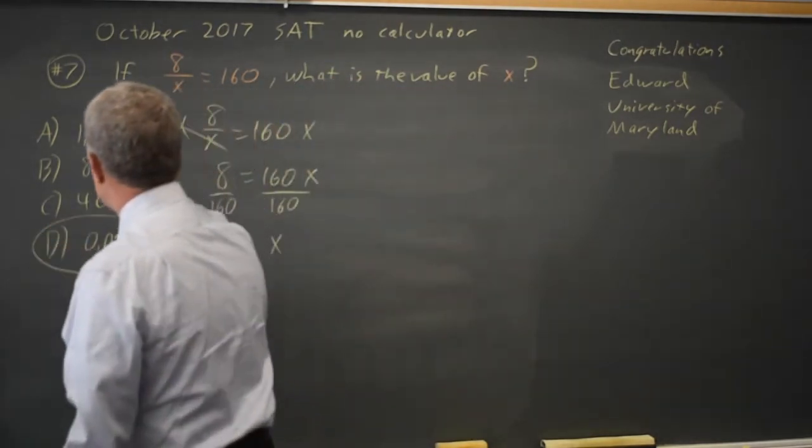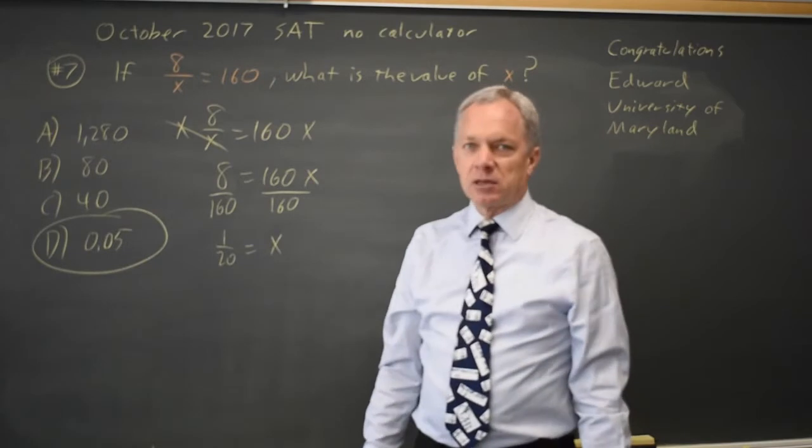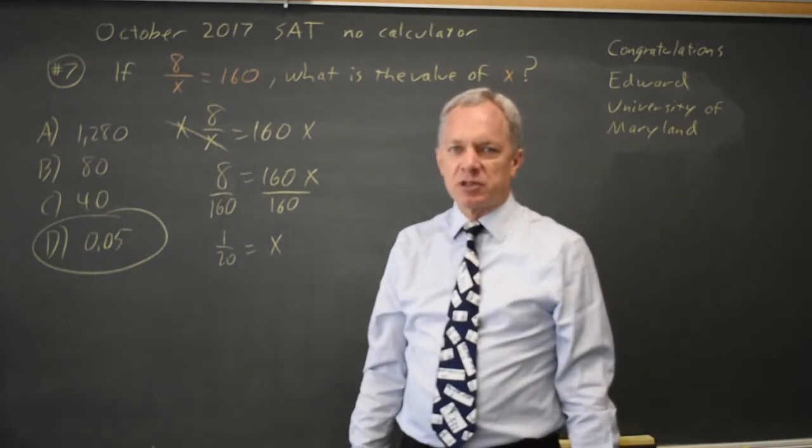That's less than 1, so we know it has to be d, and 1 over 20 is, in fact, 0.05, so that is correct.